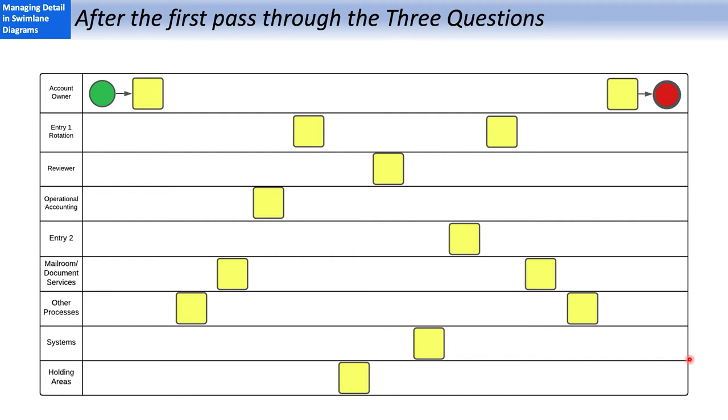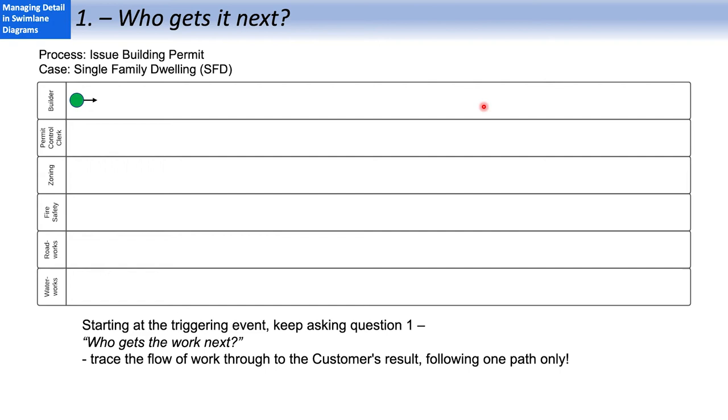After the first pass through these three questions, you're going to have something like this, either virtual post-its on Lucidchart or LucidSpark or something you've done with physical post-its in person. No step names, no flow lines, just the pattern of involvements.